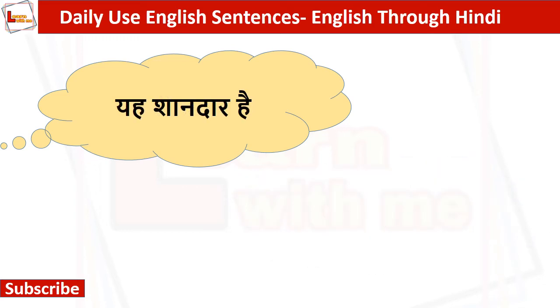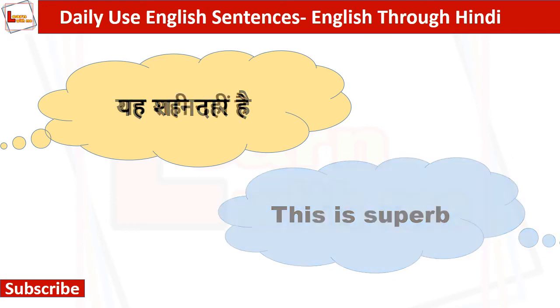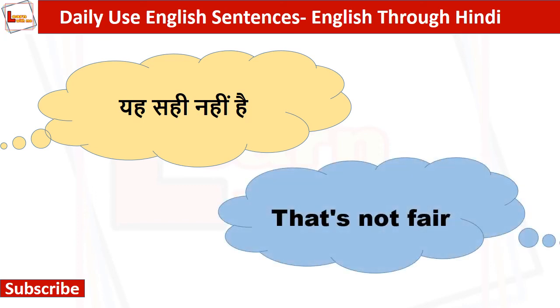ये शानदार है — This is superb. कई बार हम ऐसे ही बोल देते हैं — Superb. ये सही नहीं है — That's not fair.